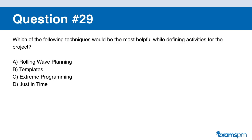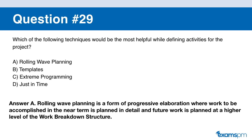Question number twenty-nine. Which of the following techniques would be most helpful when defining activities for your project? A: rolling wave planning. B: templates. C: extreme programming. D: just in time. If you said A, you are correct. Rolling wave planning is a form of progressive elaboration where work to be accomplished in the near term is planned in detail and future work is planned at a higher level of the work breakdown structure.